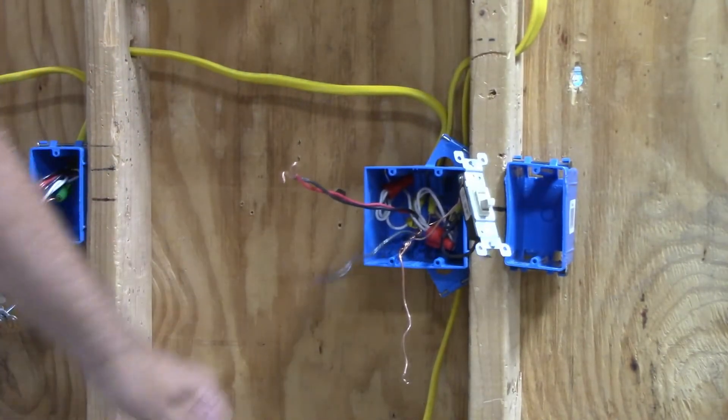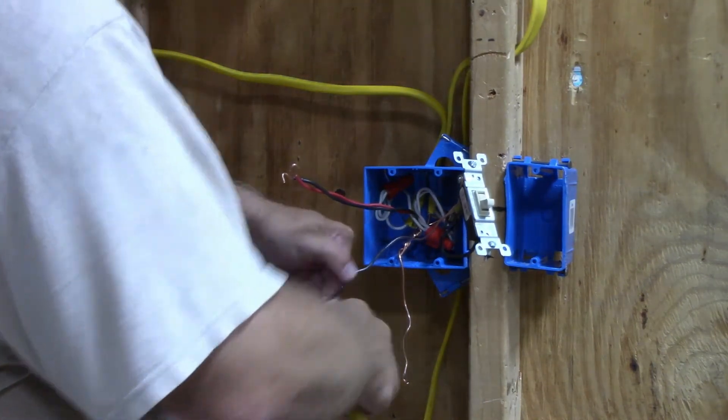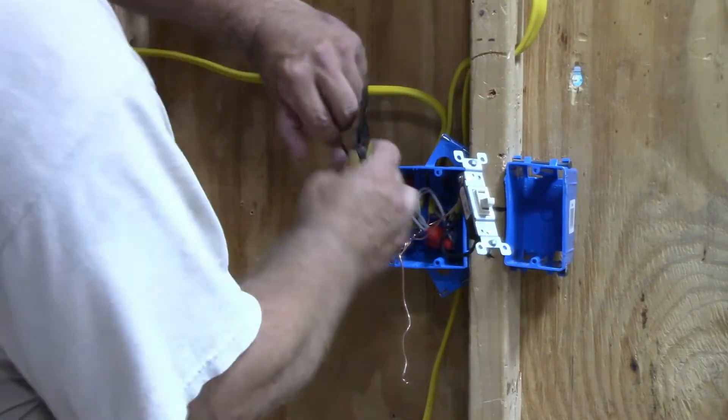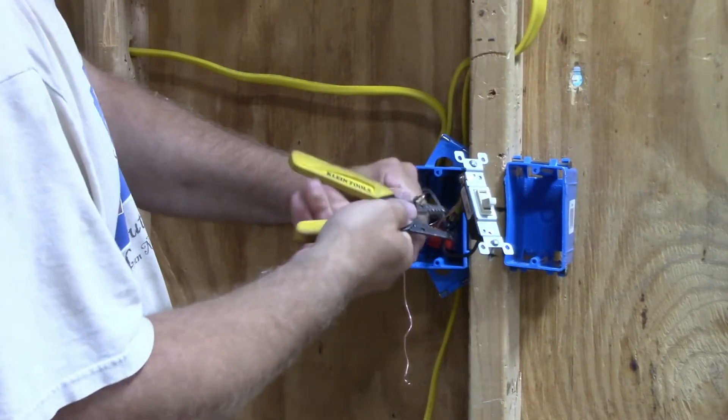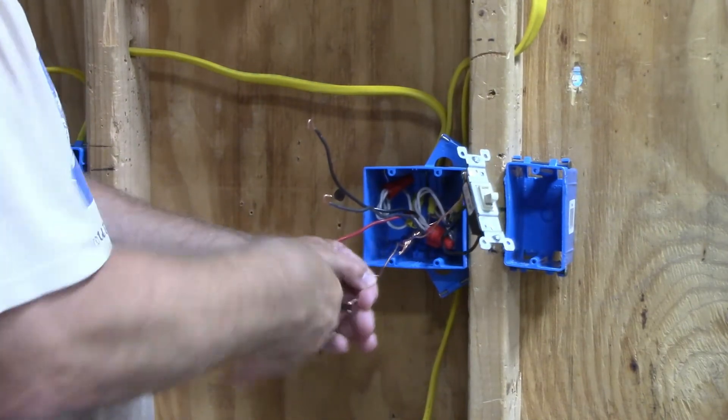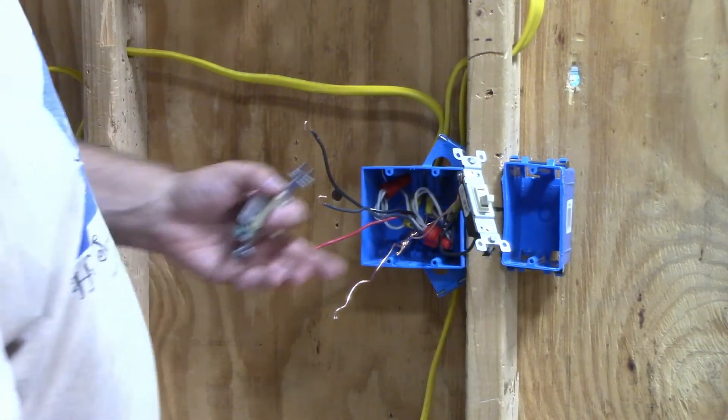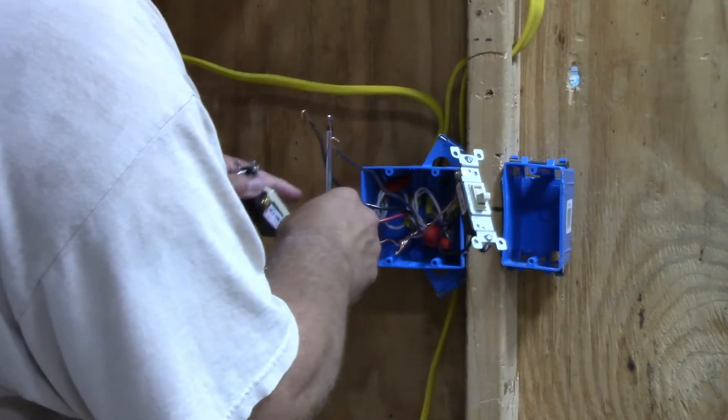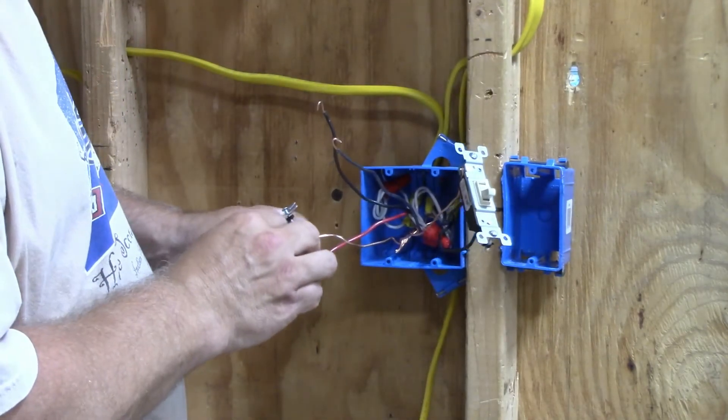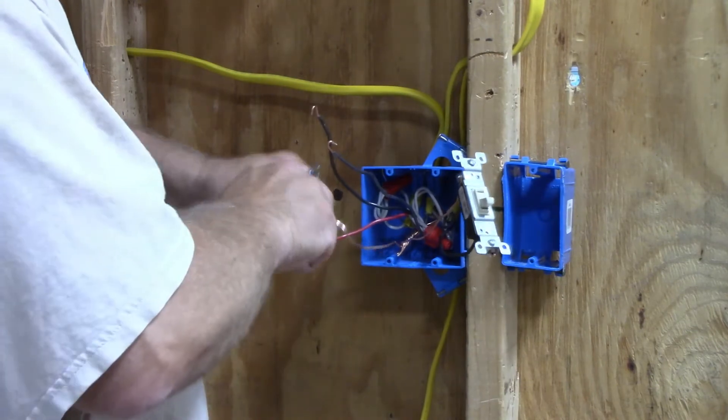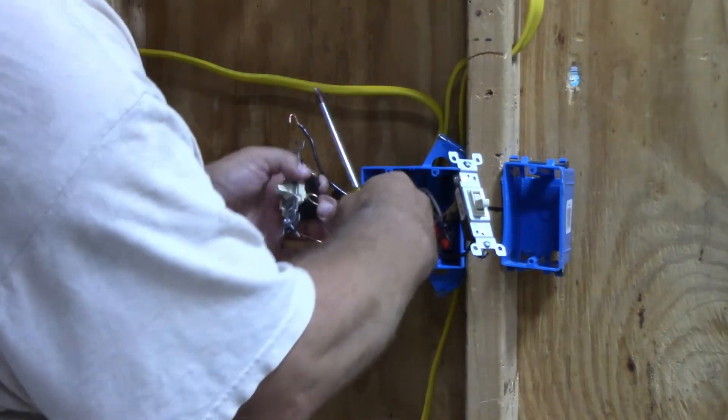That leaves you with three wires. I'm going to take my three-way switch. I'm going to hook up the ground. The power, which is this wire, goes to the black screw.